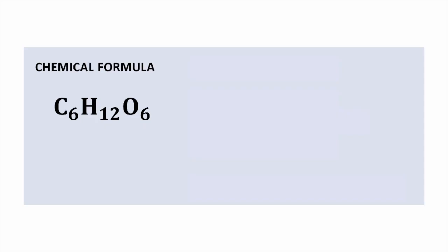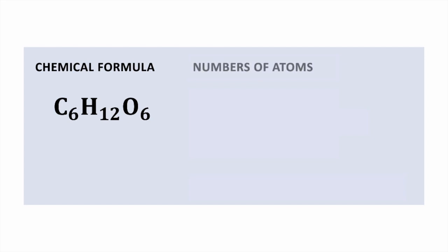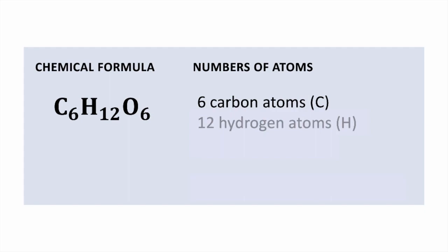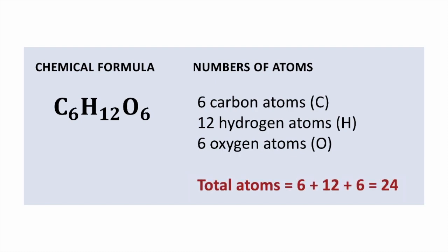Here are some examples of chemical formulas. C6H12O6 is the formula for glucose. The subscript 6 to the right of the C means there are six carbon atoms. The subscript 12 to the right of the H means there are 12 hydrogen atoms. And the subscript 6 to the right of the O means there are six oxygen atoms. Adding these up: 6 plus 12 plus 6 equals 24 atoms total.